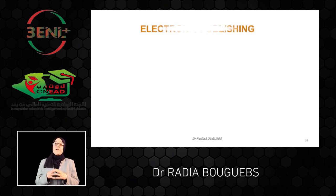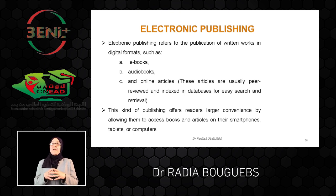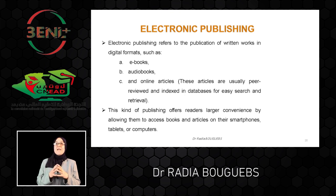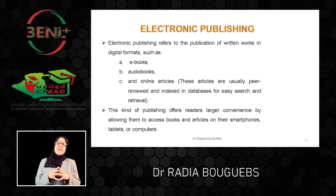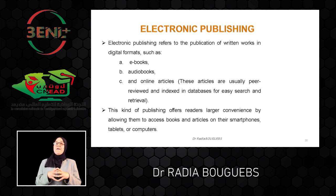Electronic publishing, as a third type, refers to the publication of written works in digital formats such as ebooks, audiobooks, and online articles. These articles are usually peer reviewed and indexed in databases for easy search and retrieval. This kind of publishing offers great convenience by allowing readers to access books and articles on their smartphones, tablets, or personal computers.